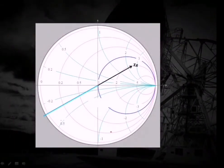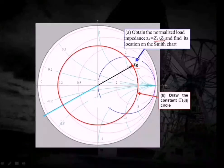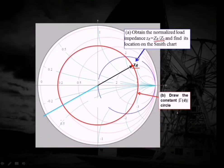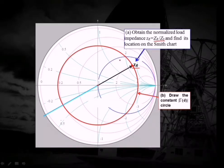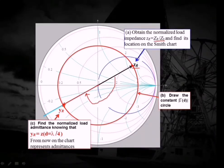First, draw the load impedance ZR as a point on the Smith chart — this is the normalized value ZR divided by Z0. Second, draw the constant reflection coefficient circle, or VSWR circle, by taking the center at (1,0) and extending an arc to the load impedance point. Third, draw the normalized admittance by taking the diametrically opposite point on the VSWR circle from ZR to get YR. These steps were covered in the previous Smith chart lecture.